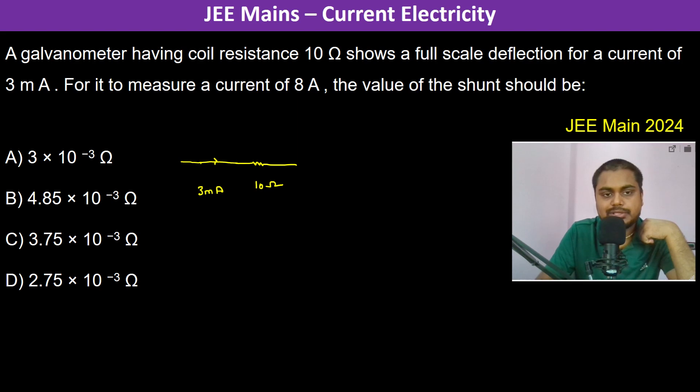So what is being measured is current, therefore the galvanometer is actually converted into an ammeter. And how do we convert it into an ammeter? By having a resistance in parallel. So this is the shunt resistance in parallel.